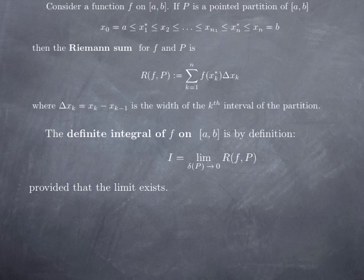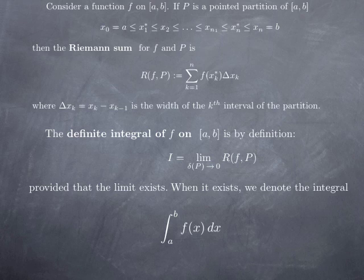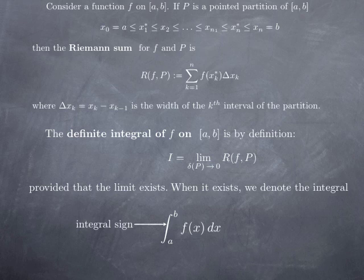The limit is in the same sense as before — that is, for every ε, there is a δ such that for any pointed partition of [a, b], if the parameter is less than δ, then the distance between the Riemann sum and the limit is less than ε. When the limit exists, we use a more convenient notation for this integral. This elongated S is called an integral sign. You see that in the Riemann sum we have a sigma for the sum, and when we go to the limit, this sigma becomes an elongated S — it still stands for the idea of summing, but we pass from a discrete sum to a continuous sum.